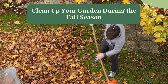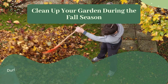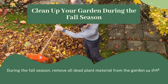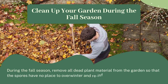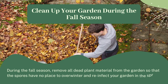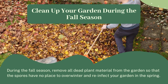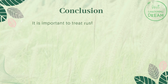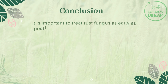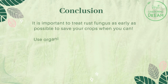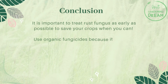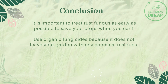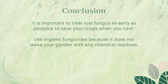Clean up your garden during the fall season. During the fall season, remove all dead plant material from the garden so that the spores have no place to overwinter and re-infect your garden in the spring. It is important to treat rust fungus as early as possible to save your crops when you can. Use organic fungicides because they do not leave your garden with any chemical residues.